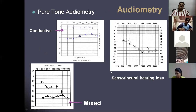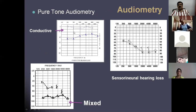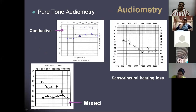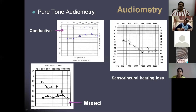In pure tone audiometry, it will be in the form of a conductive hearing loss or a mixed hearing loss. Any picture among these two is characteristic of ASOM. It can be a pure conductive hearing loss where there is a widening of more than 20 decibels between bone conduction and air conduction, or both can drop with an air-bone gap of more than 20 decibels.